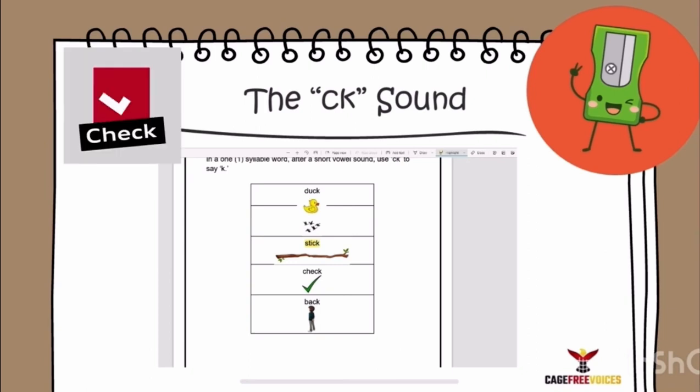What about check? Check. We hear the CK sound in check. CK is at the end right after the short E sound in check. Ch-E-K. Short E is E. Ch-E-K.